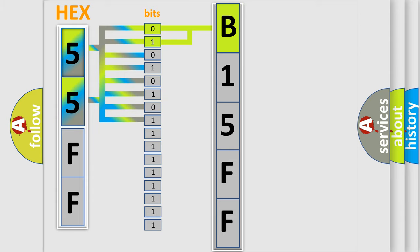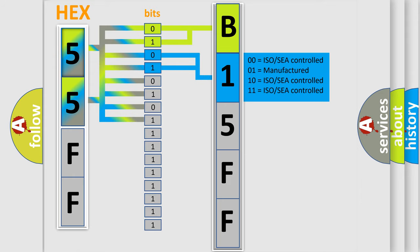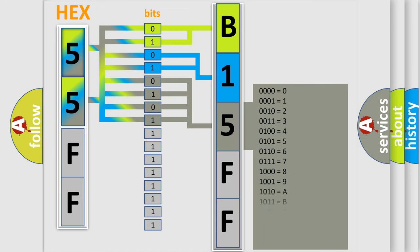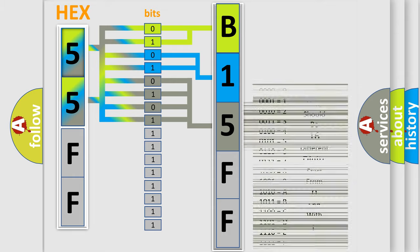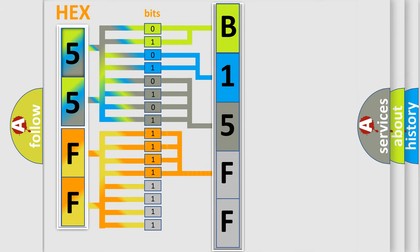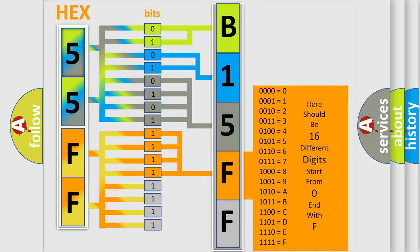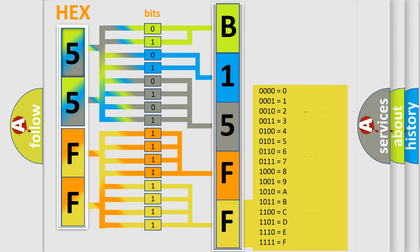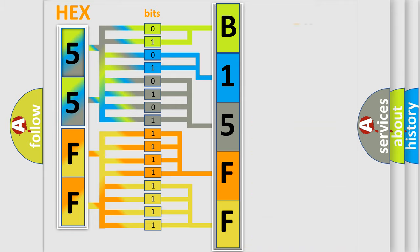The next two bits determine the second character. The last bits of the first byte define the third character of the code. The second byte is composed of a combination of eight bits. The first four bits determine the fourth character of the code, and the combination of the last four bits defines the fifth character. A single byte conceals 256 possible combinations.